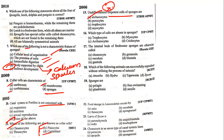Which type of cell is absent in sponges? Very simple — cnidoblasts are not present in sponges. Trophocytes, myocytes, and archaeocytes are present in sponges, but cnidocytes are not. So the answer is cnidocytes.